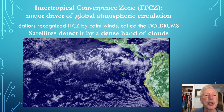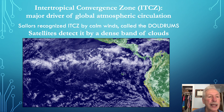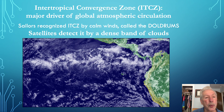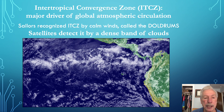The intertropical convergence zone, known as the ITCZ, is a major driver of global atmospheric circulation. Wherever the air currents are rising or sinking vertically, the surface winds become very calm. Sailors long ago recognized the ITCZ by the calm winds they called the doldrums. Now satellites recognize the ITCZ by the dense band of clouds.